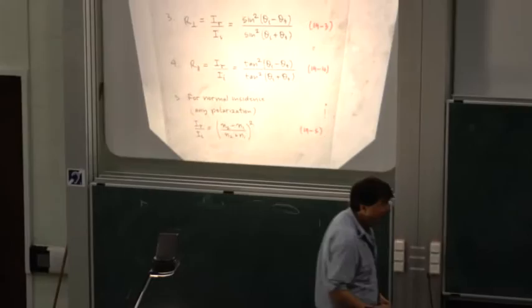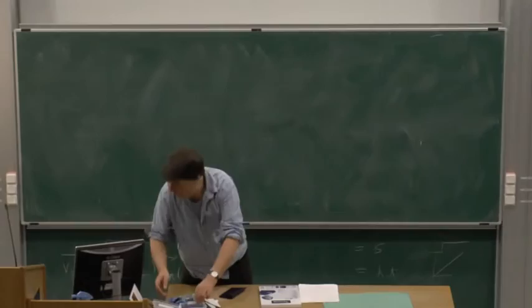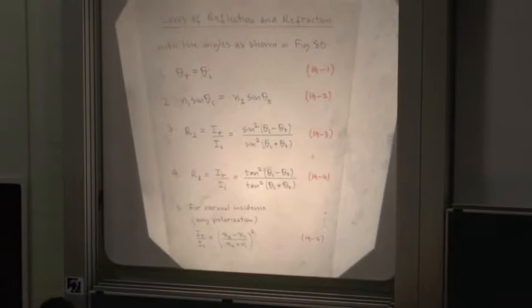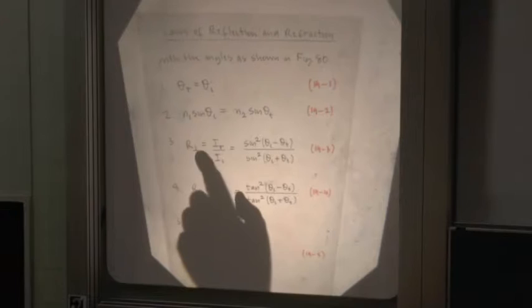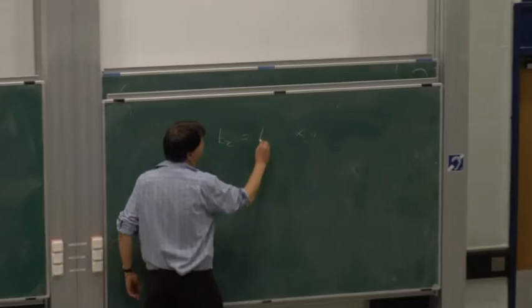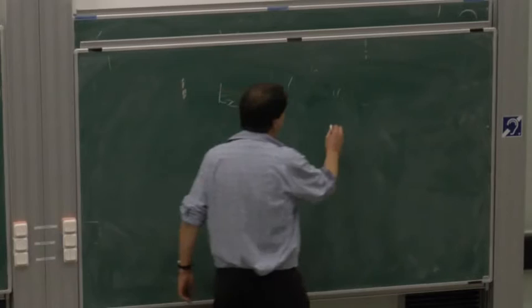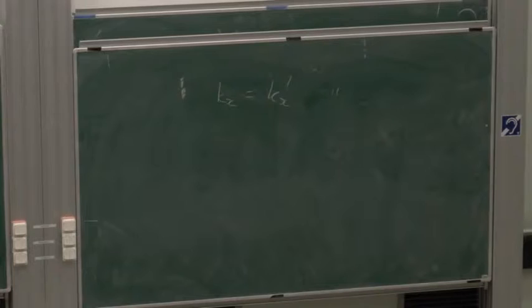Monday's lecture, which was recorded, started with the laws of reflection and refraction. It took about 27 equations from start to finish to calculate the reflection coefficient for light polarized perpendicular to the plane of incidence. There is a weekly problem set on that, starting from the point where you've already proved that the angle of incidence equals the angle of reflection, which implies that k_x and k_x' are the same, and Snell's law has been proved.